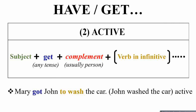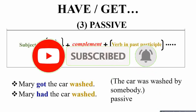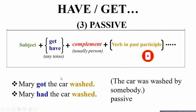If you have 'get' or 'have' in the passive, the sentence structure is: subject + get/have (any tense) + complement + verb in the past participle form. For example: 'Mary got the car washed' — the car was washed by somebody for Mary. Similarly, 'Mary had the car washed.' So the following verb is in the past participle regardless of whether you use 'get' or 'have'.